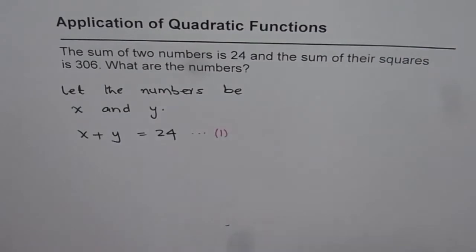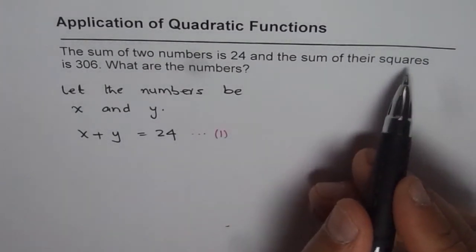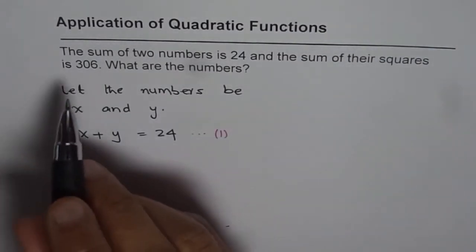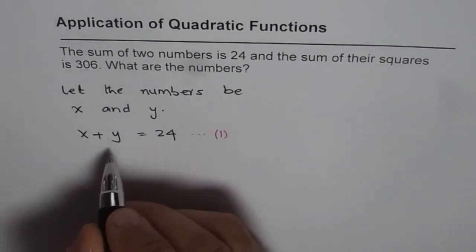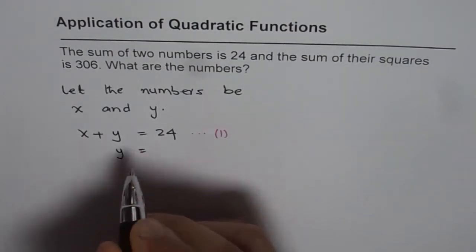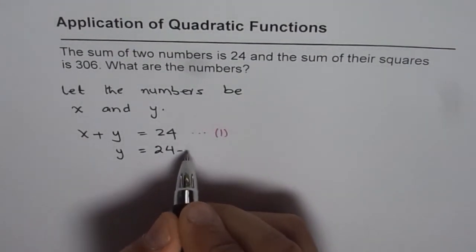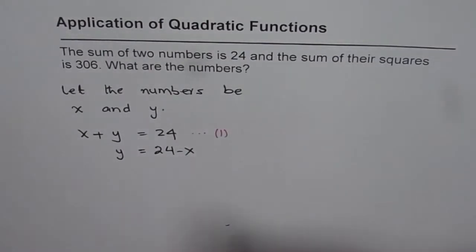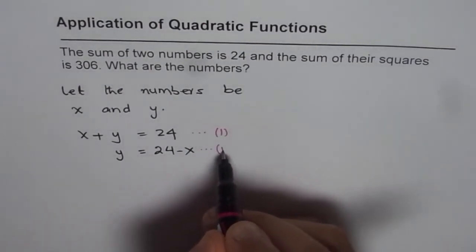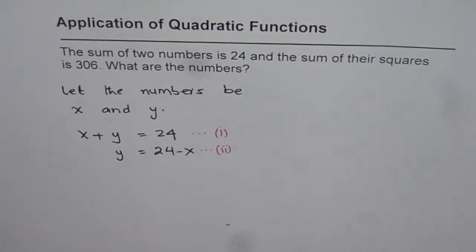Now before going to the second equation, what we can do is write what y is equal to. So y equals 24 minus x, and I will write this as my second equation, which I get from the first one.